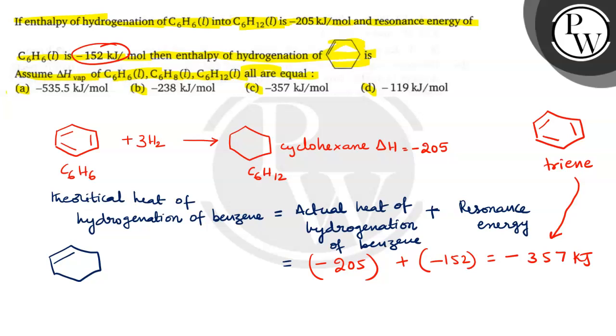Now, for one double bond which is present in the cyclohexene, how much? So for three double bonds, minus 357. For one double bond, how much?